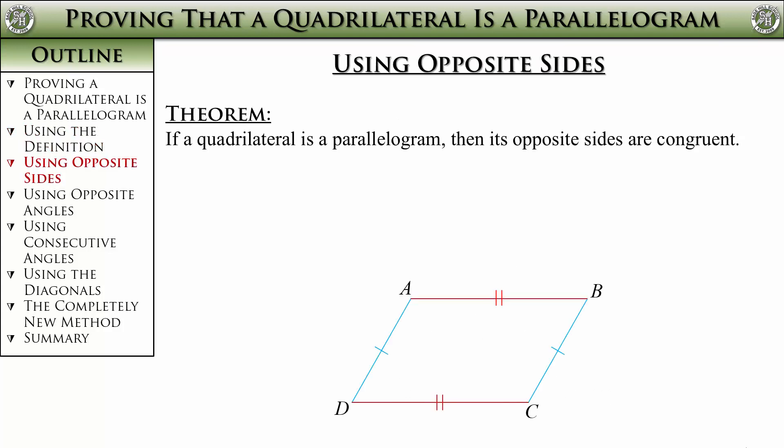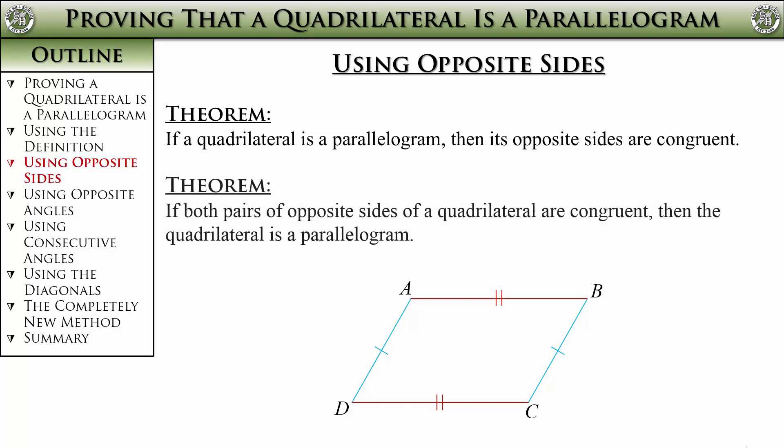One down, five to go. Last time we had this theorem that said if we had a parallelogram then we knew the opposite sides were congruent. Well, the converse also works, and it allows us another way to prove a quadrilateral is a parallelogram. It's just the converse of last time.